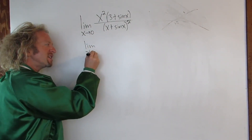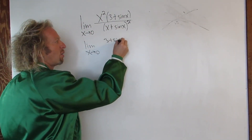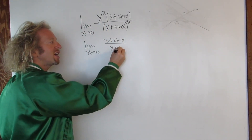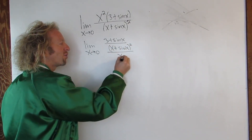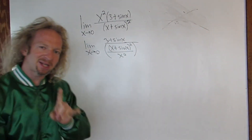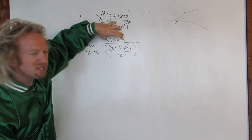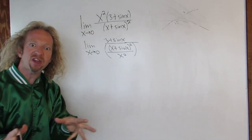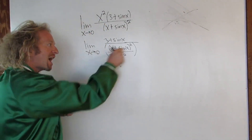We're going to write this as the limit as x approaches zero. The top we'll leave unchanged: 3 plus sine x. Now watch this — you can bring this downstairs. You can write it like this: x plus sine x, squared, over x squared. This is the same thing. When you take this and divide by x squared, you multiply by the reciprocal — division is multiplication when you flip it — you get the same thing.